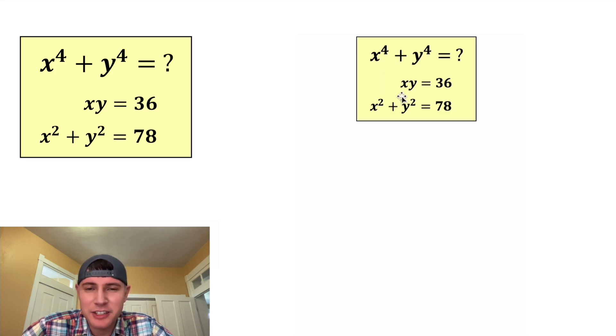Hey guys, this looks like a fun one. It gives us that x times y is equal to 36, and that x squared plus y squared is equal to 78. And it wants to know what is x to the fourth plus y to the fourth.